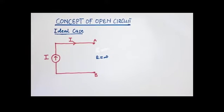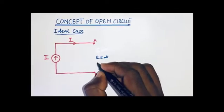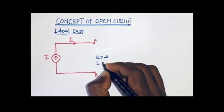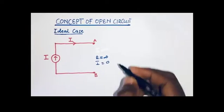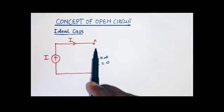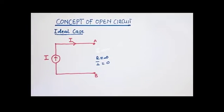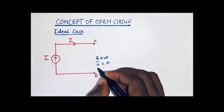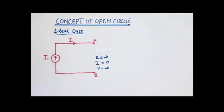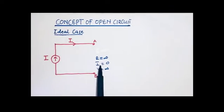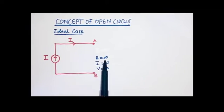We also know that resistance offers opposition to the flow of current. And so, a small amount of current that is close to zero would like to flow through the high resistance path. Then the voltage drop across the path is also experienced to be infinite, because we have a small amount of current multiplying a very high resistance path, giving us infinite voltage.